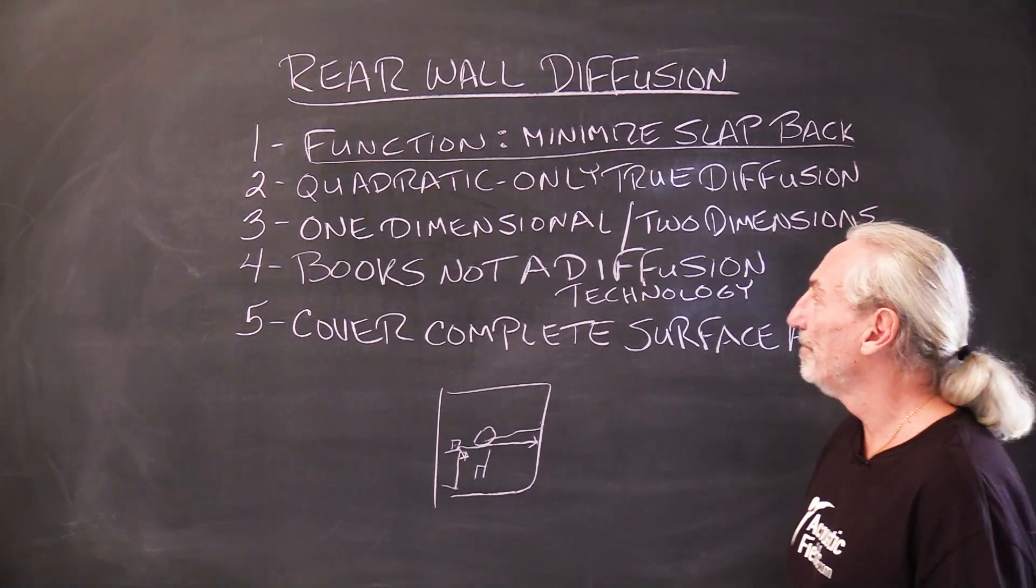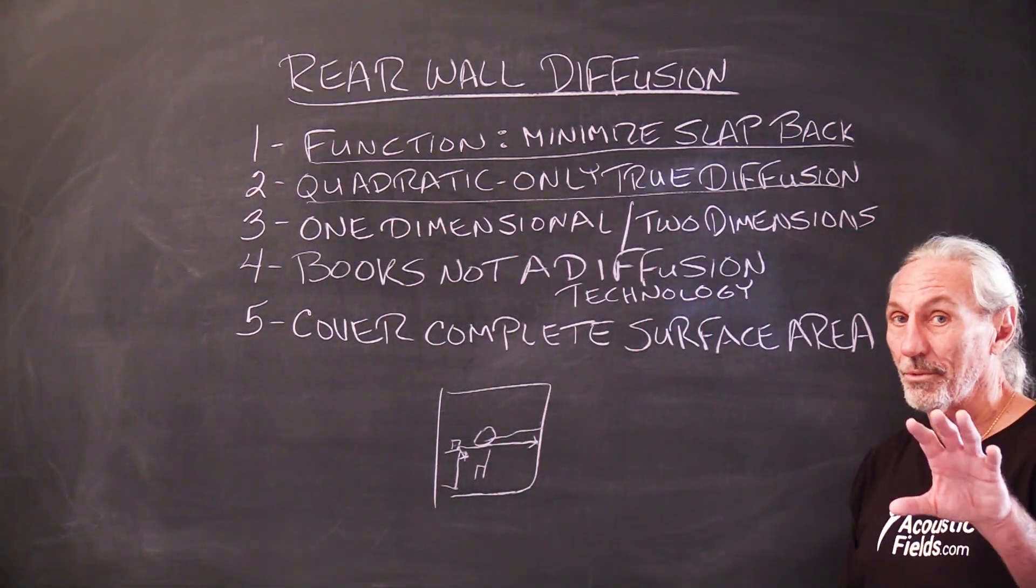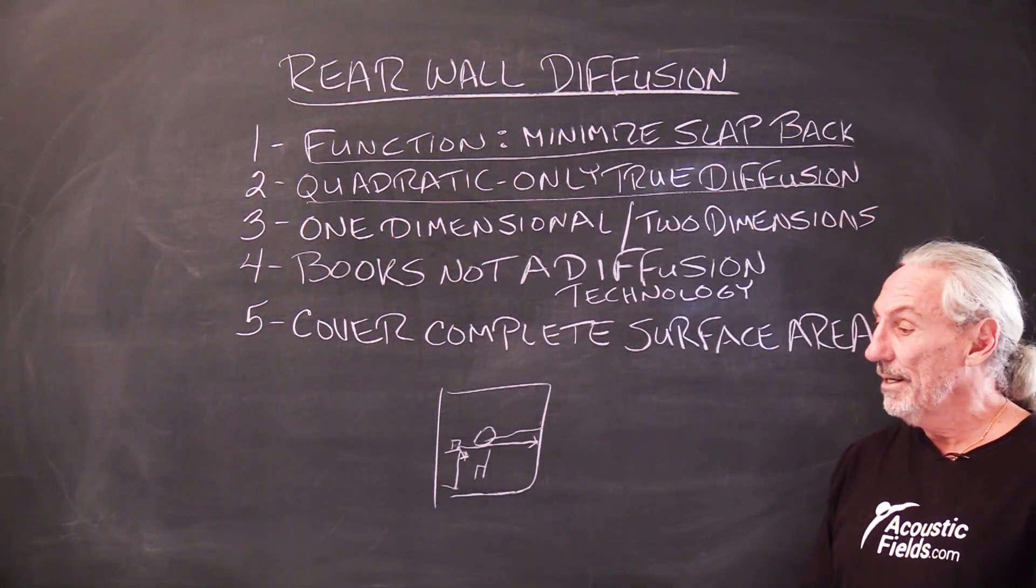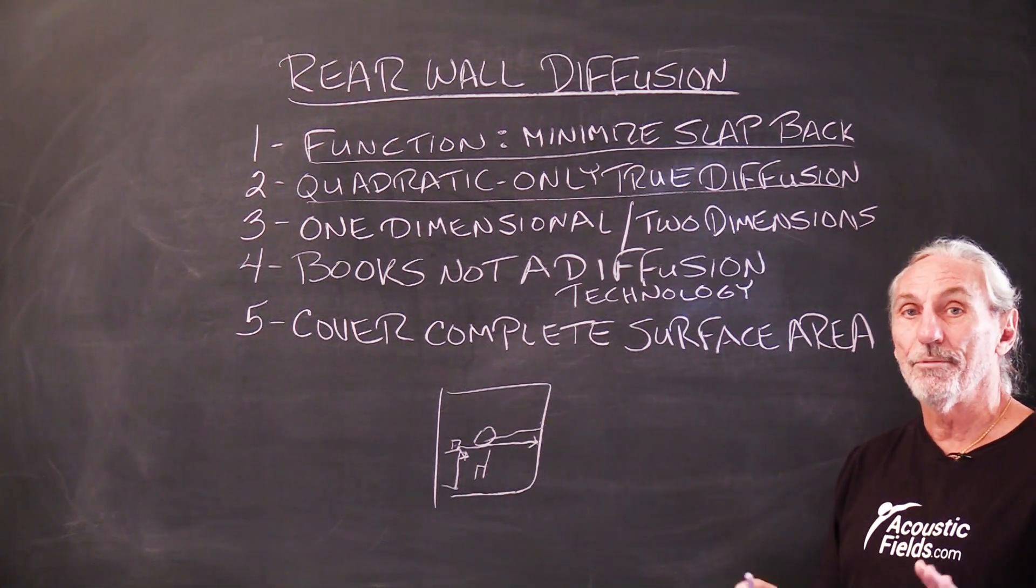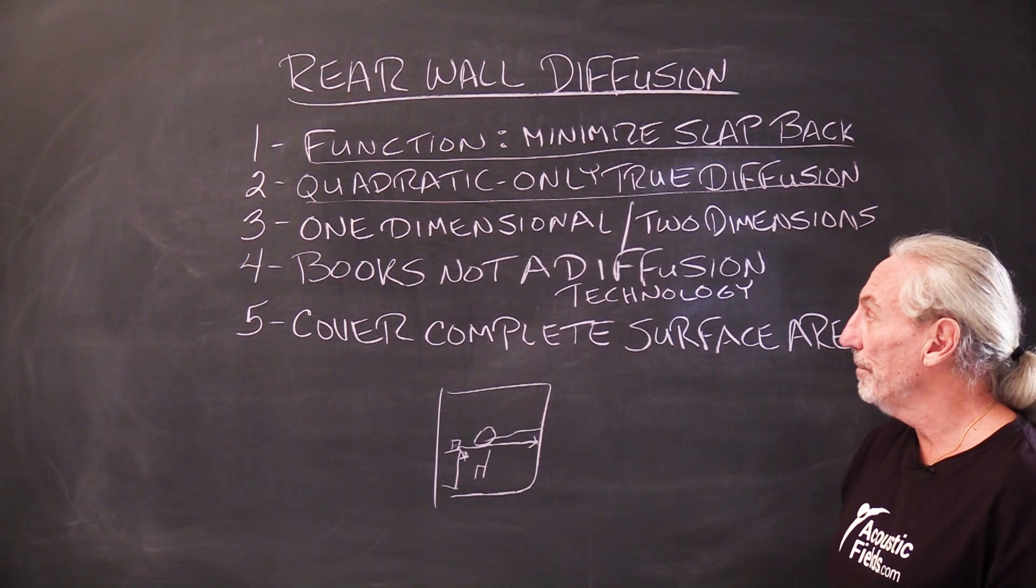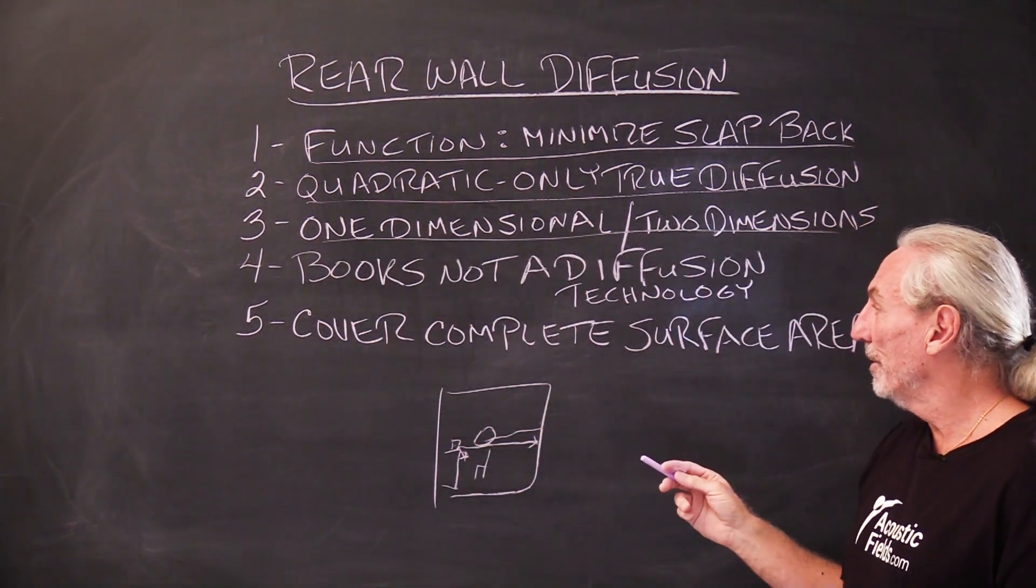So what's the answer? Well, we know quadratic diffusion is the only one true diffusion, so we want to stick with quadratic because it satisfies all those rigid criteria of diffusion that's required for diffused sound fields. So we have our two choices, one dimensional or two dimensional.